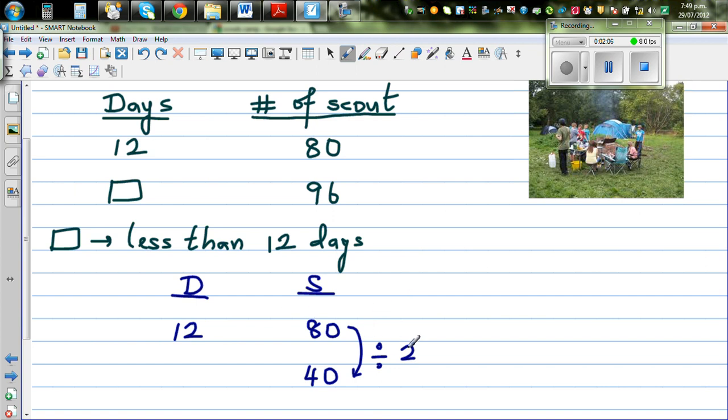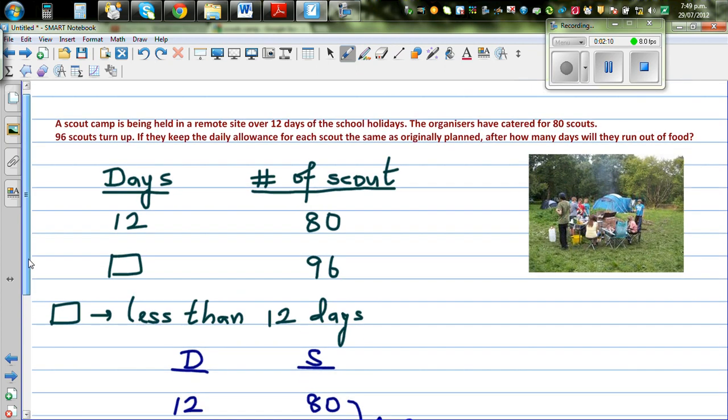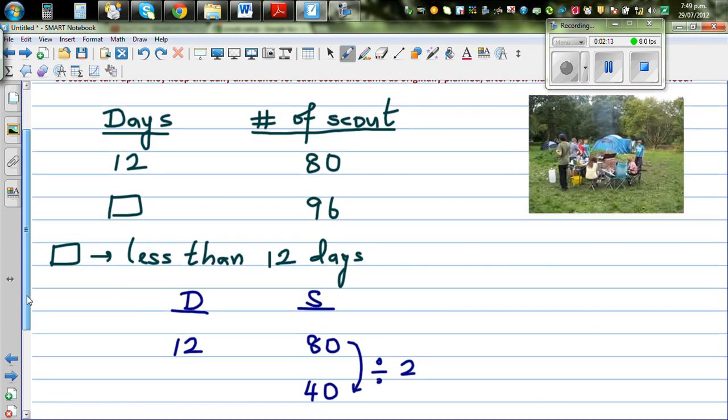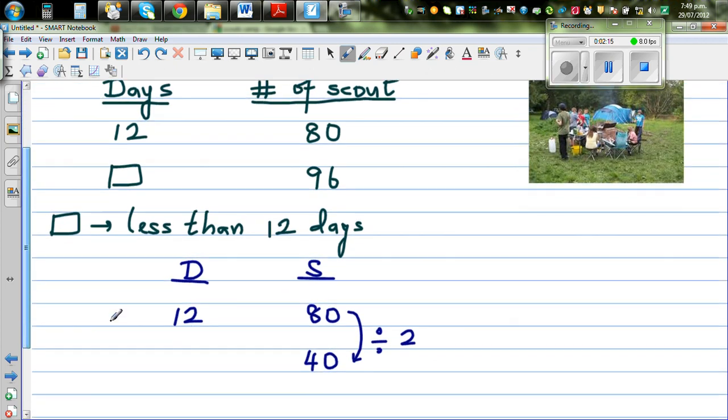Or the ration is the same, or the proportion, or the amount of food that is given to each scout is the same. So logically, if you understand, if this is becoming half, you can use the food for 24 days. So what's happening here? So this is times by 2.